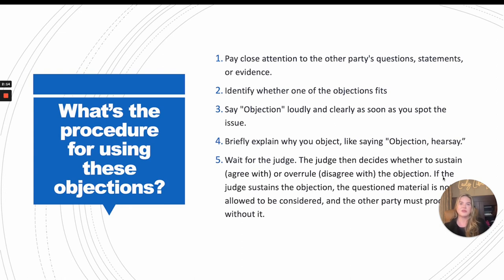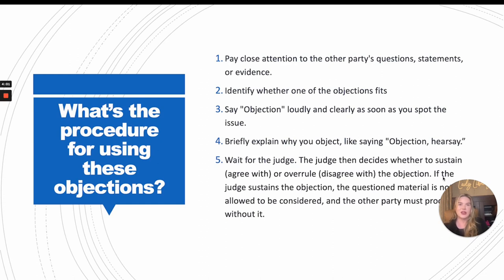This is the procedure for using these objections. Pay close attention to the other party's questions, statements, or evidence. Identify whether one of the objections fits. If you identify something problematic that the other party says or is trying to present, say objection loudly and clearly as soon as you notice. You're going to have to interrupt the petitioner to do this — she'll be talking and you'll say objection. That is actually the main exception where it's okay to interrupt. If you fail to do so and she gets all the evidence in and then you object, the judge may deem your objection untimely. So it's very important that you do that right away.